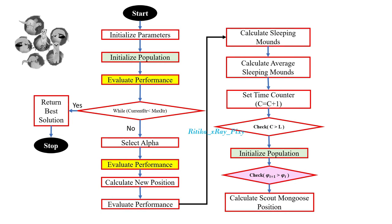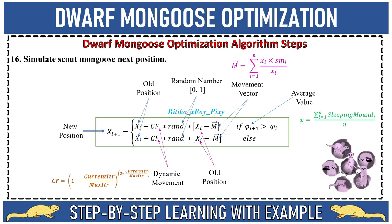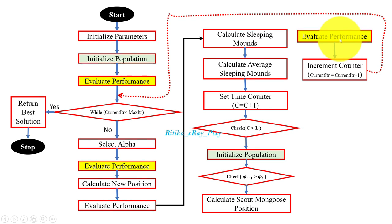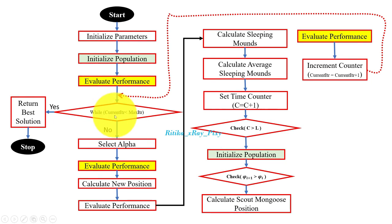Next we check the average sleeping mound value. We compare the new average sleeping mound value with the older one. Here we calculate the scout mongoose position — scouts will discover new sleeping mounds. We then perform either exploration or exploitation: if the new sleeping mound average value is greater than the older value, we perform the exploration phase; otherwise we perform the exploitation phase. After that, we evaluate performance using the objective function, calculate fitness values for the new positions, increment the counter, and check the stopping condition. When met, we stop and display the best solution.